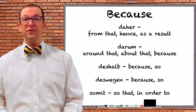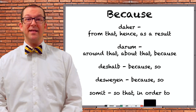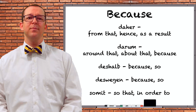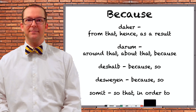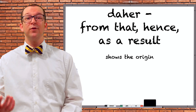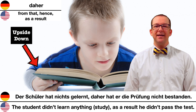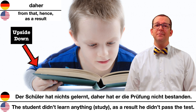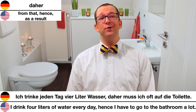Each of them has its own subtleties. Daher is like saying from that, hence, or as a result — it shows the origin of the event. For example: Der Schüler hat nichts gelernt. Daher hat er die Prüfung nicht bestanden — The student didn't study; as a result, he didn't pass the test. Ich trinke jeden Tag vier Liter Wasser. Daher muss ich oft auf die Toilette — I drink four liters of water every day; hence I have to go to the bathroom a lot.